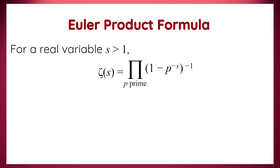The Euler product formula states that for a real variable s greater than 1, we have zeta(s) equal to the product over all primes p of the reciprocal of 1 minus p to the power minus s. This representation is a way to factorize the zeta function into terms associated with prime numbers.